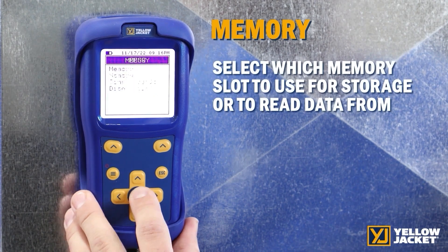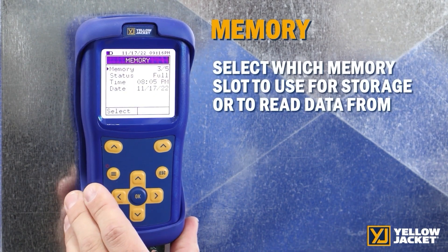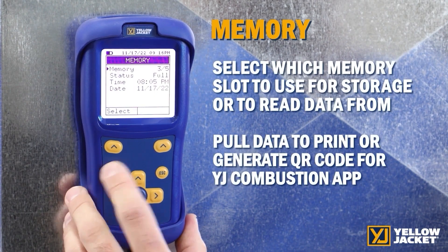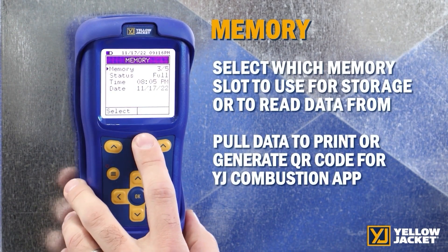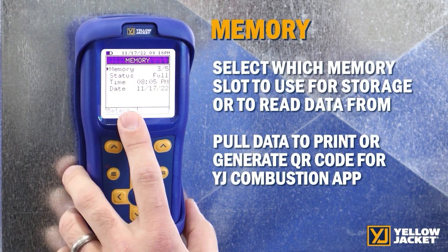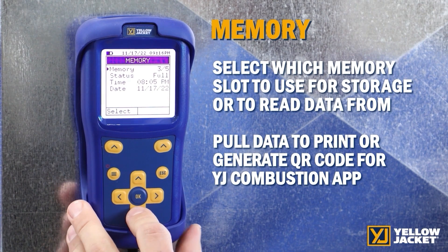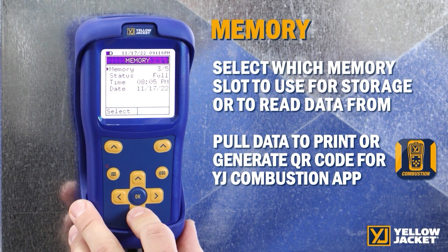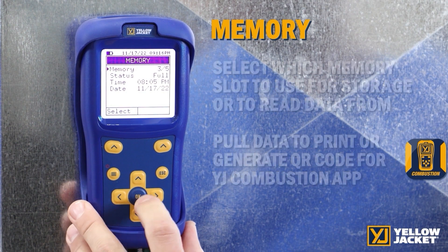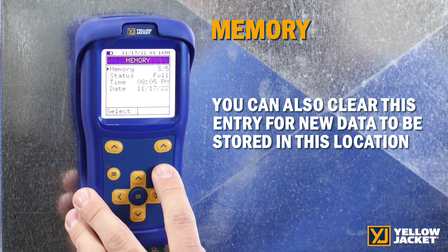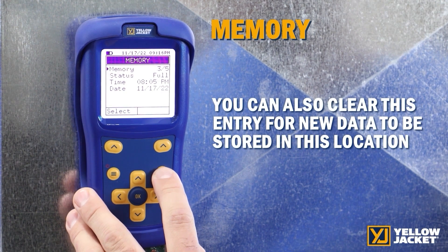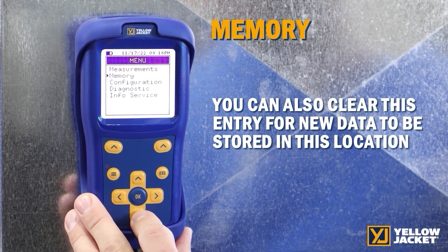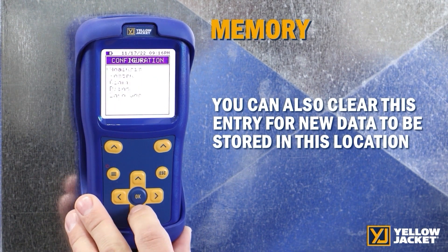Select which memory slot to use for storage or to read data from. Selecting memory allows you to pull recorded data for printing or to generate a QR code for use with the YJ Combustion app. Or you can clear this entry for new data to be stored in this file location.